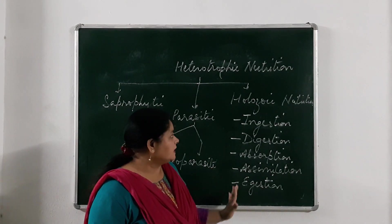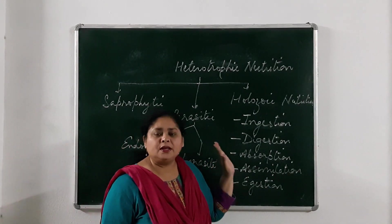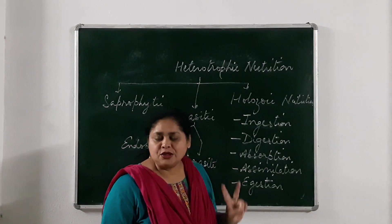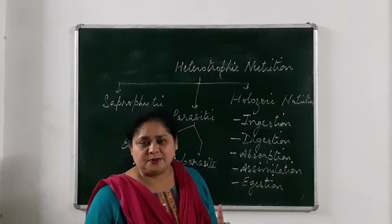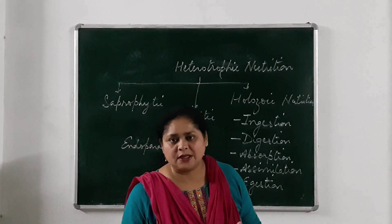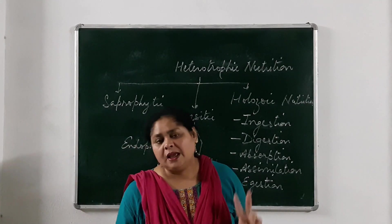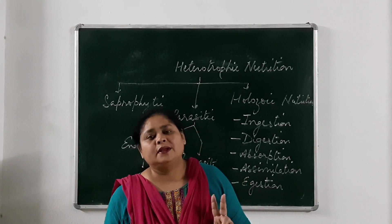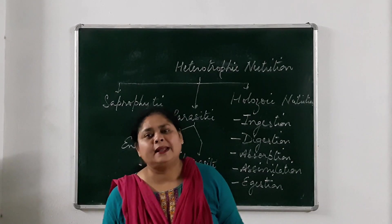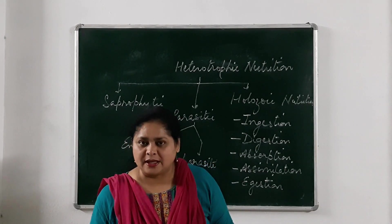So these are the five different steps of holozoic nutrition. We will discuss holozoic nutrition in detail in two organisms — one is Amoeba, which is a unicellular organism, and the other is a human being — in our next session. Thank you.